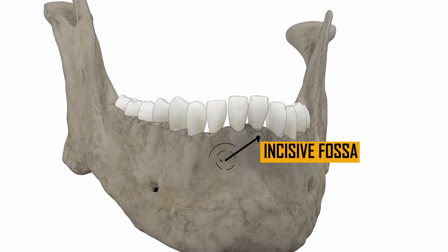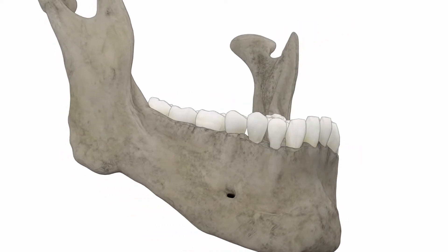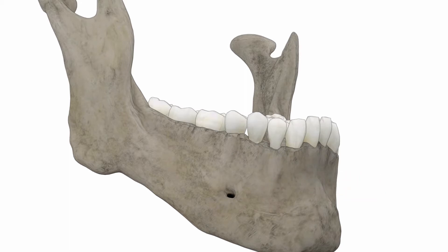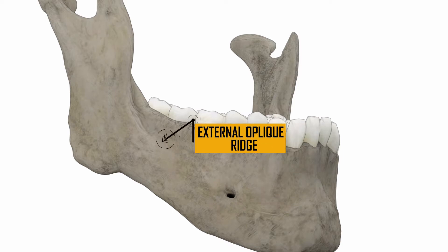Below the second premolar is the mental foramen, through which the mental nerve and vessels exit. The oblique line, known as the external oblique ridge, courses posteriorly from the mental tubercle to the anterior border of the ramus.